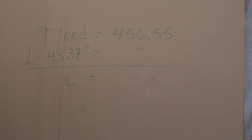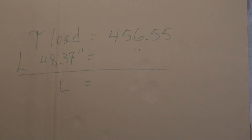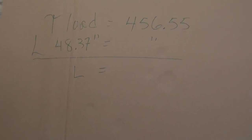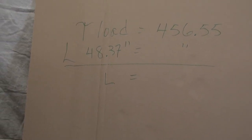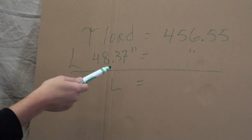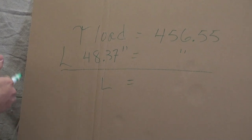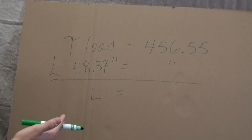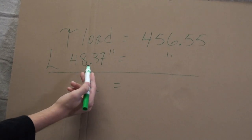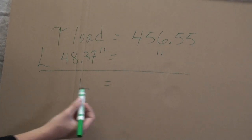So the torque of the load is 456.55 inch pounds. What is that? Well, this is just weight times distance—in this case, our load times distance. So in order to get just the amount of weight, we divide both sides by 48.37, and that gets us...